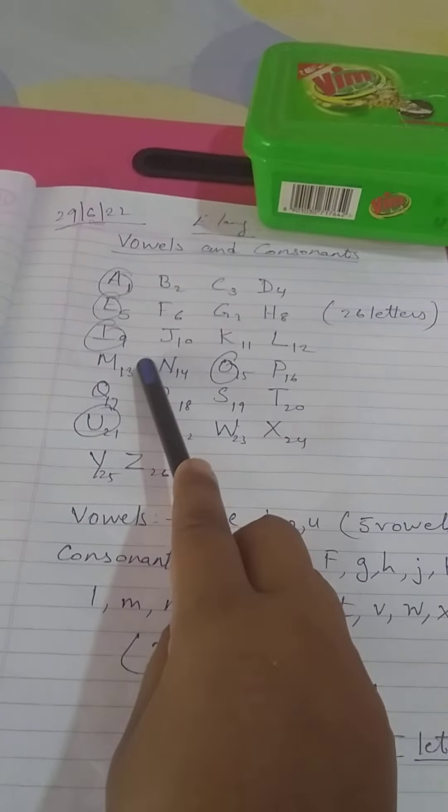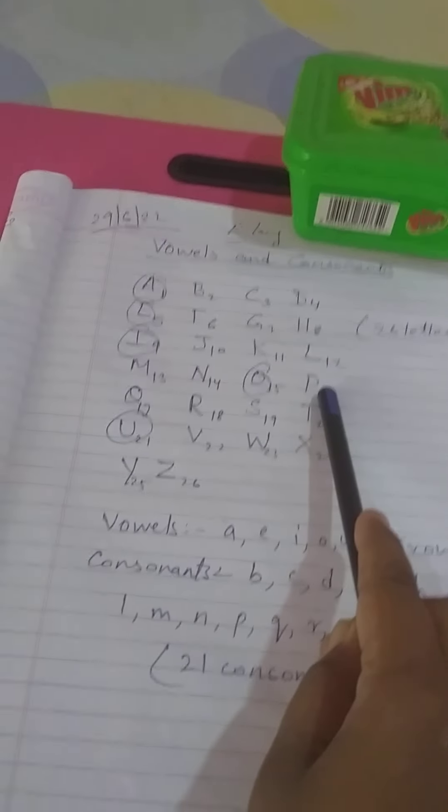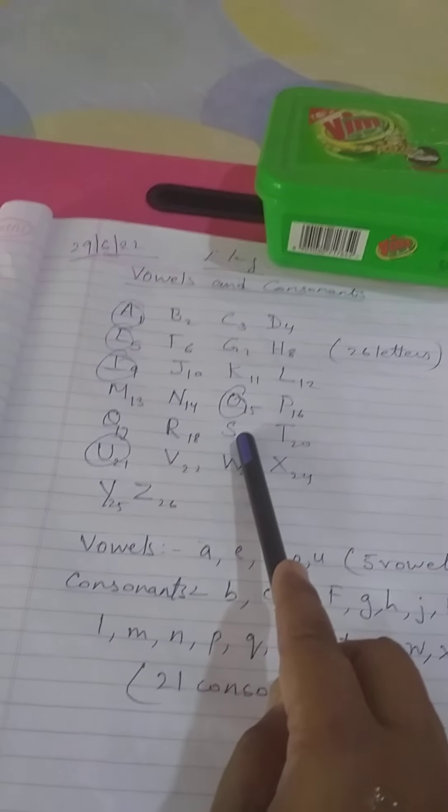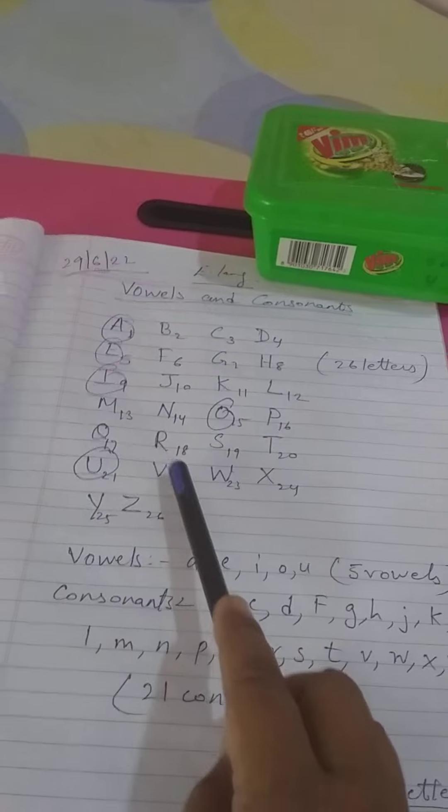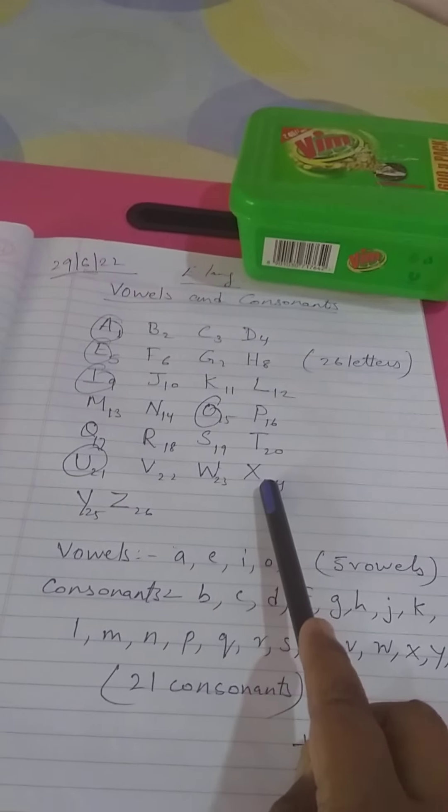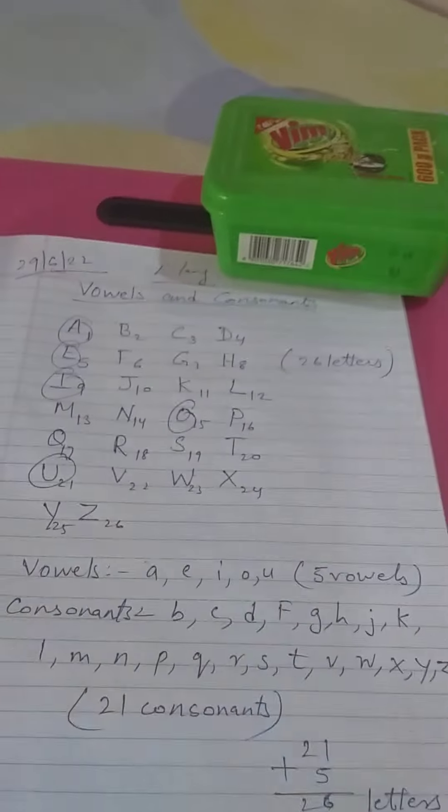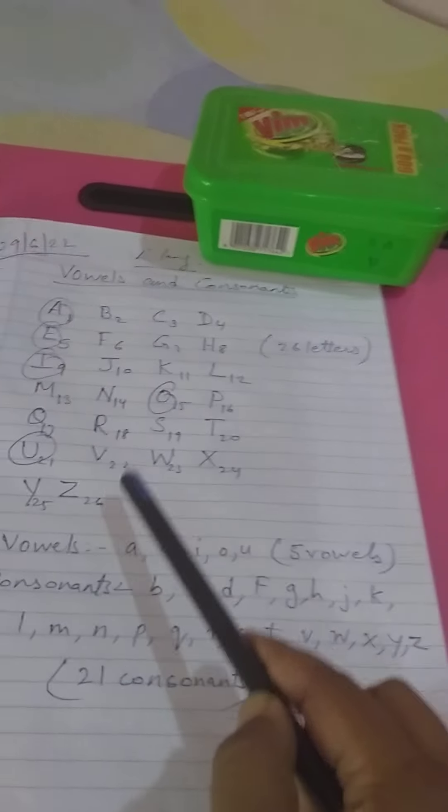L12, M13, N14, O15, P16, Q17, R18, S19, T20, U21, V22, W23, X24, Y25, and Z26. In this way, if we number all the letters from A to Z, you will get 26 letters.